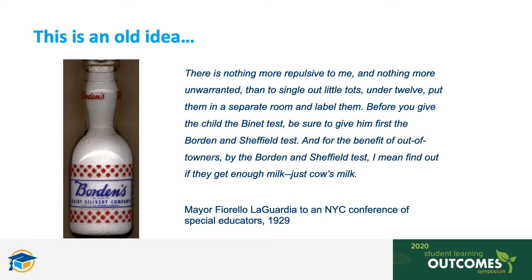This quote is from a very controversial address by New York City Mayor LaGuardia to a conference of special educators in 1929. He says: 'There is nothing more repulsive to me and nothing more unwarranted than to single out little tots under 12, put them in a separate room and label them. Before you give the child the Benet test, be sure to give him first the Borden and Sheffield test. And for the benefit of out-of-towners, by the Borden and Sheffield test, I mean find out if they get enough milk. Just cow's milk.' He is essentially talking about equity and construct validity. IQ tests purport to measure raw intellectual ability, and here LaGuardia is positing that maybe in this particular application, they just measure hunger and poverty instead.